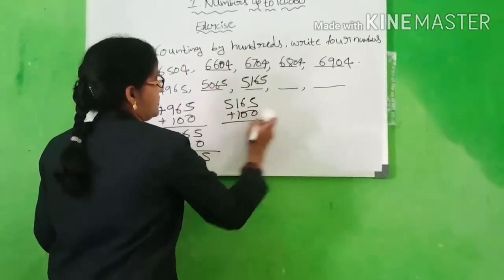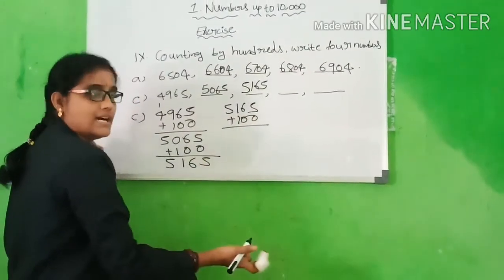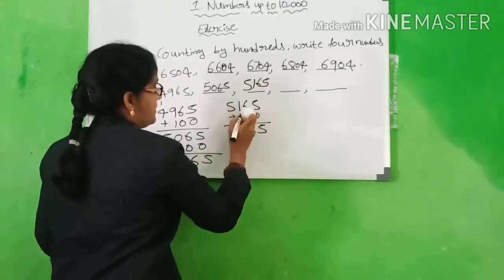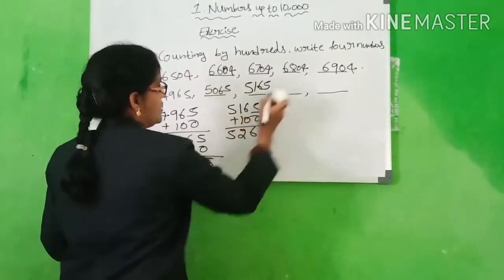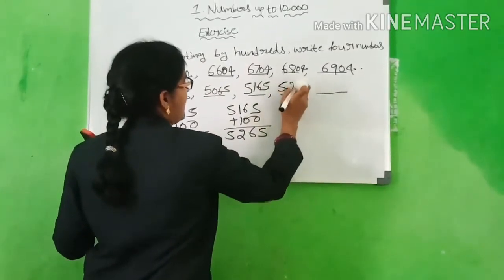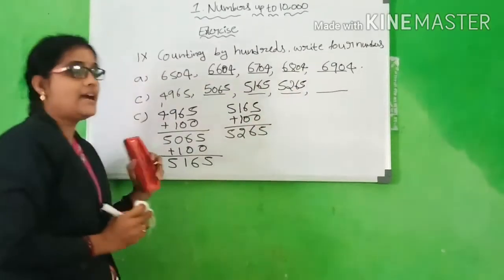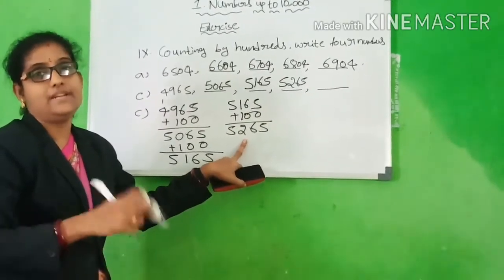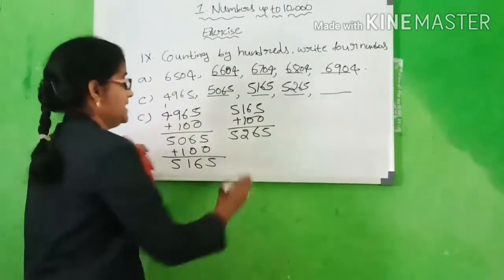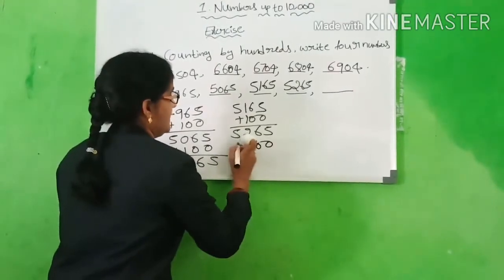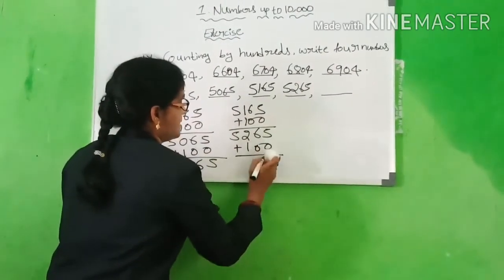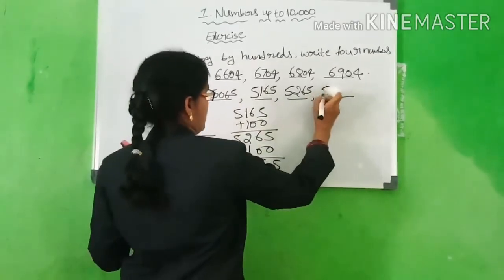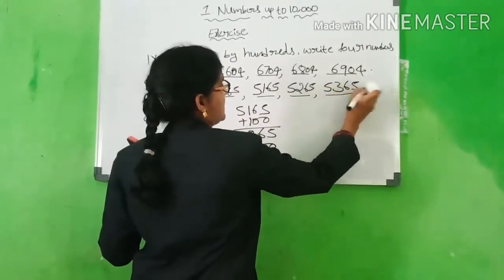You have to add 100 to get the next number: 5, 6 plus 0 is 6, 1 plus 1 is 2, 5. What is the answer? 5,265. Now add this number by 100 again: 5, 6, 2 plus 1 is 3, 5. What is the answer? 5,365.